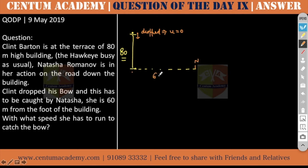Surely it will drop at the foot of the building. So with what speed she has to run to catch the bow? Now this is a horizontal motion, this is a vertical motion.